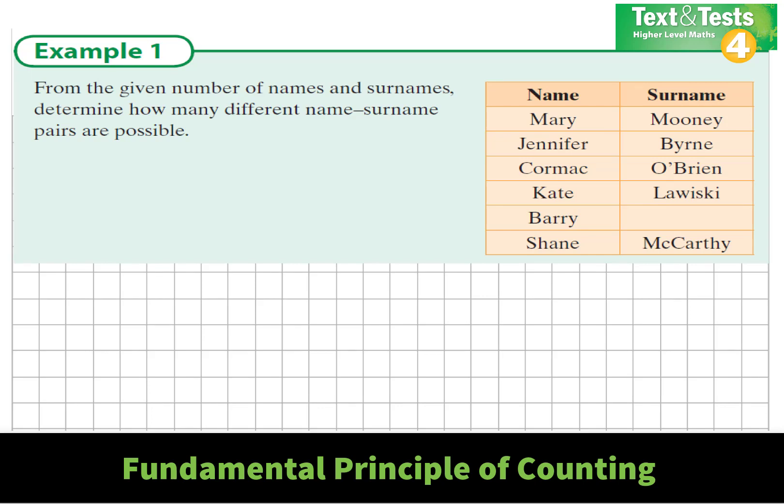So on the given name or first name here, we have 6 choices. So just noting that. And with the surnames, we have 5 choices.